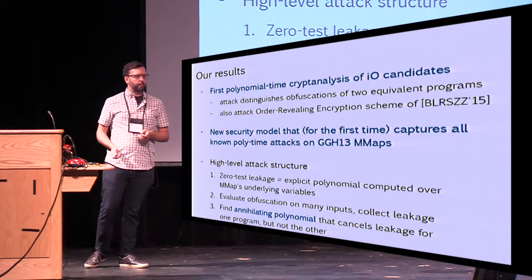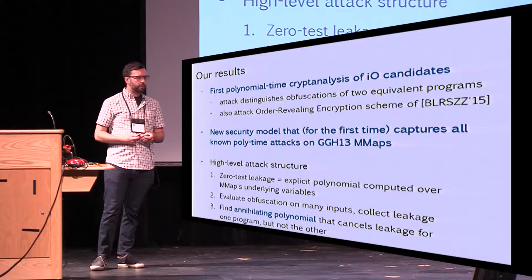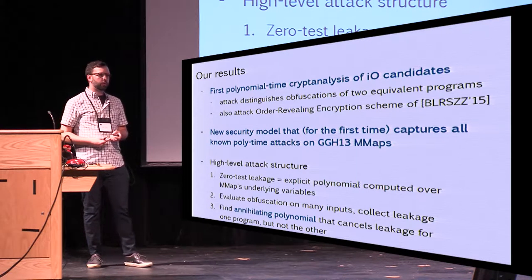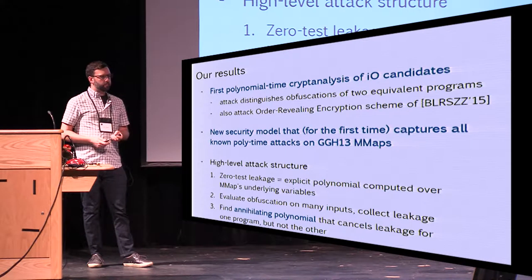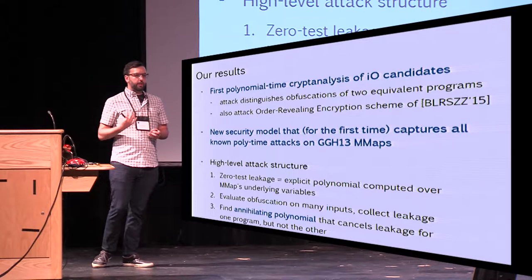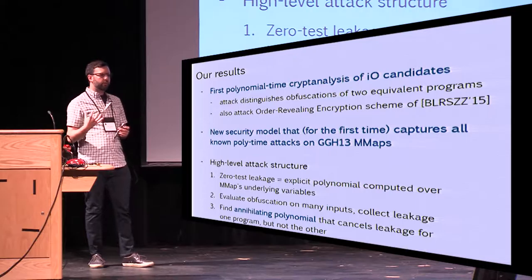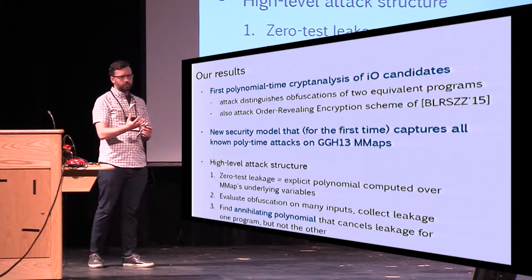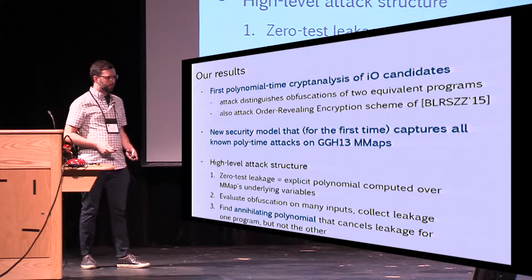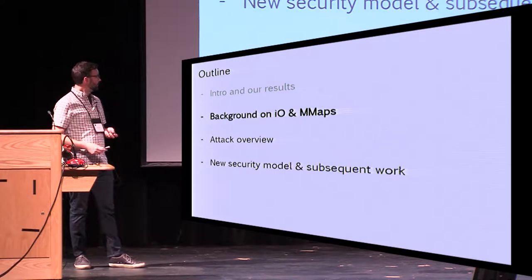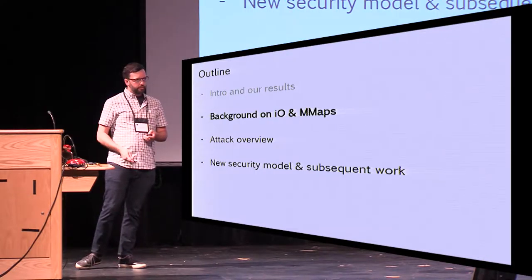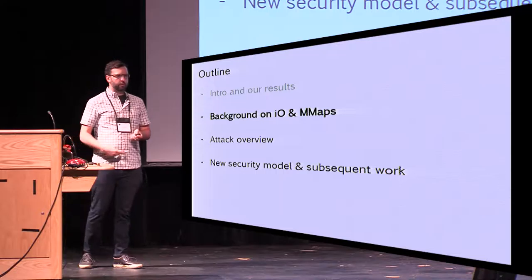Also in this paper, we propose a new security model which for the first time actually captures all of the known polynomial-time attacks on GGH13. The high-level structure of the attack is: we observed that the leakage produced by the zero test can be represented as an explicit polynomial computed over the underlying multilinear map variables. We evaluate the obfuscation on many inputs, zero test the result, collect all the leakage, and then find what's known as an annihilating polynomial that cancels all of this leakage — outputting zero for one program and something else for the other, giving us a distinguishing attack.